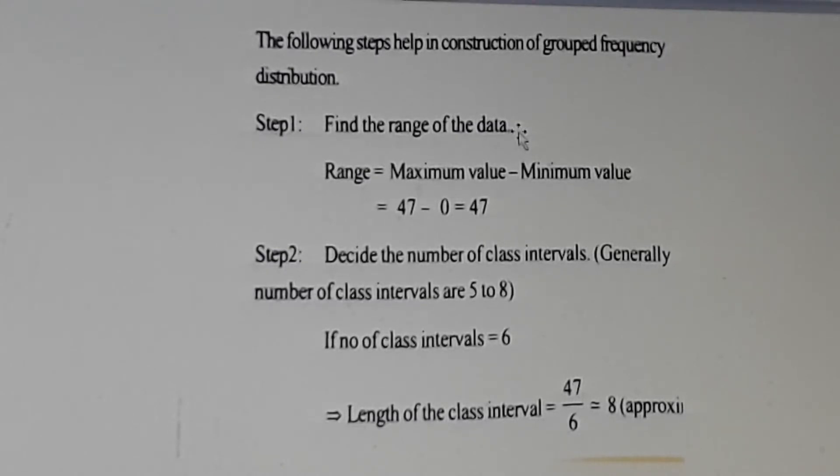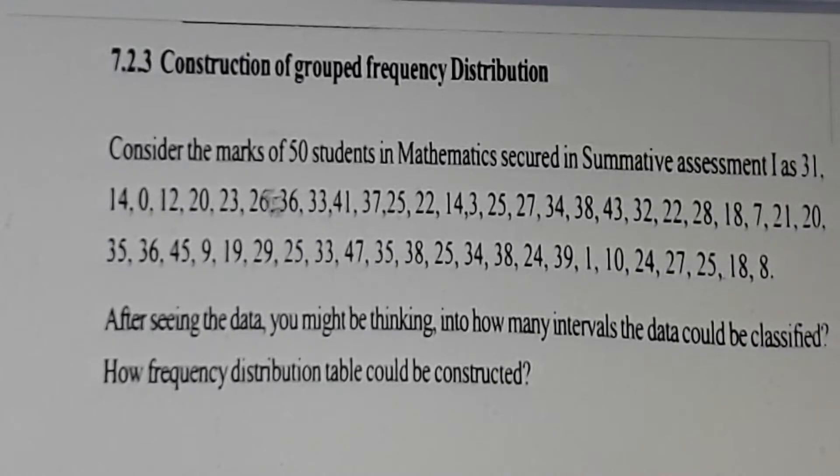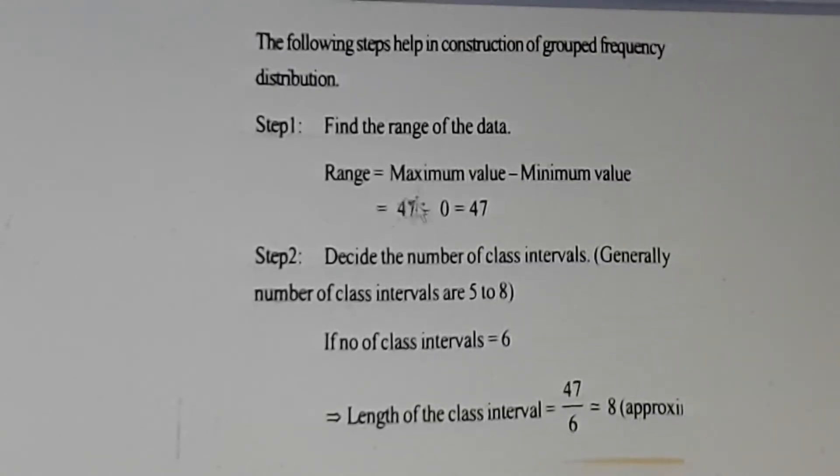How to find range? The formula of range is Maximum value minus Minimum value. Now, the given data, you see Maximum value is 47, Minimum value is 0. Maximum value minus minimum value is 47 minus 0 equals 47.